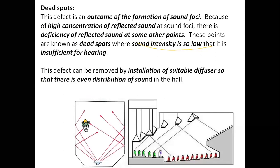Next are dead spots. Since everything is focused onto one point, the other places will have dead spots where sound is not heard. In this section, you can see reflectors on the ceiling — the sound from the source reaches the reflectors and gets down to the audience. But there are a few sets of audience where the sound is not heard, because the reflectors are not placed at the correct angles to reach those audience members. This is called dead spots.